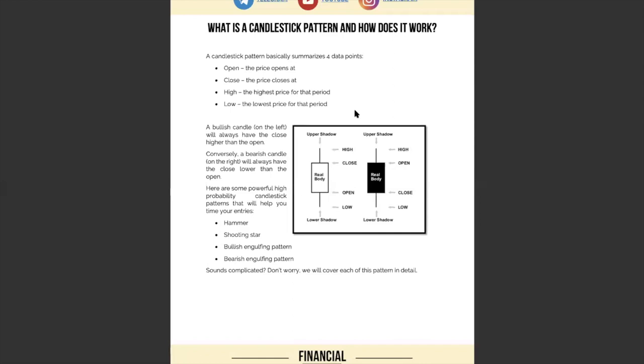What is a candlestick pattern and how does it work? A candlestick pattern looks like this, you can see the picture over here. Basically it consists of four points: you have the open, you have the close, you have the high and the low.